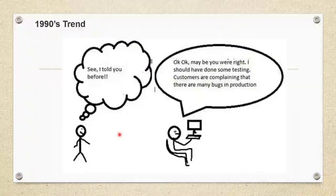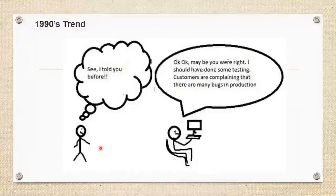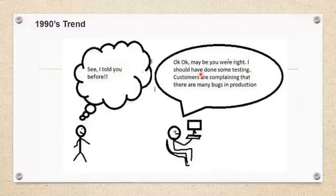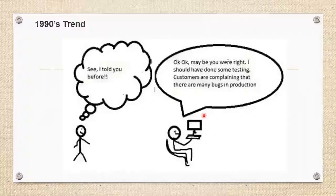As the generation moved forward, the importance and awareness of testing increased. In the 1990s, the tester would say "I told you before," and the software developer would say "Maybe you were right — I should have done some testing. Customers are complaining that there are many bugs in production." So as the generation moved forward, they understood the importance of testing and that they should focus on it.